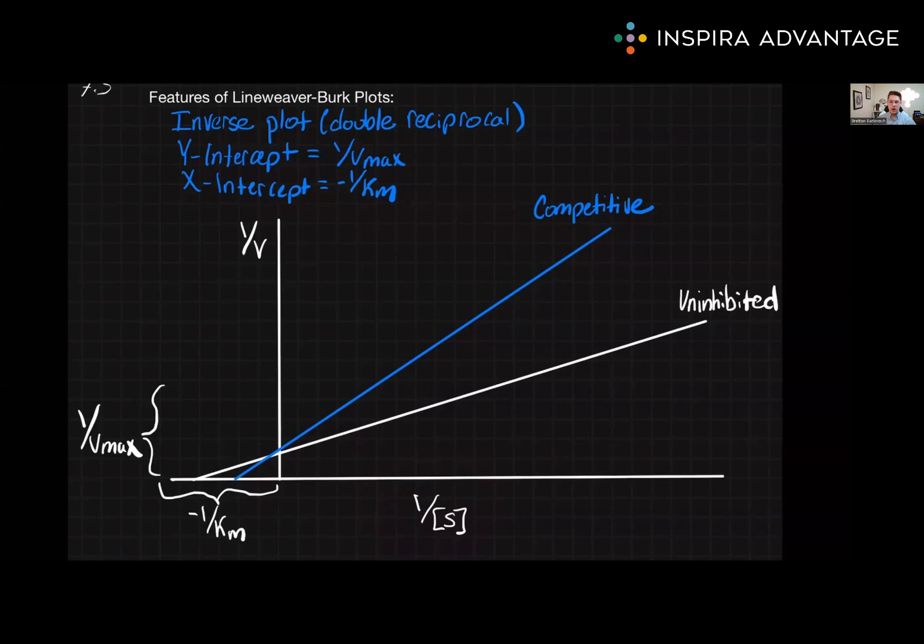Because these axes are inverse values, this is commonly called a double reciprocal plot.